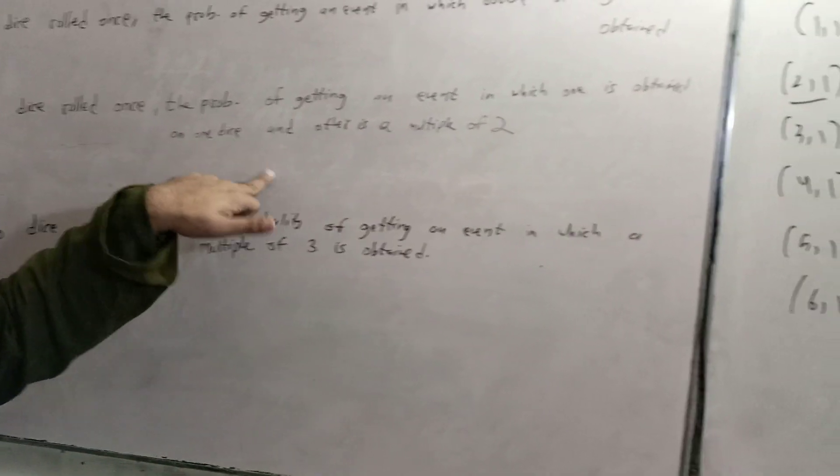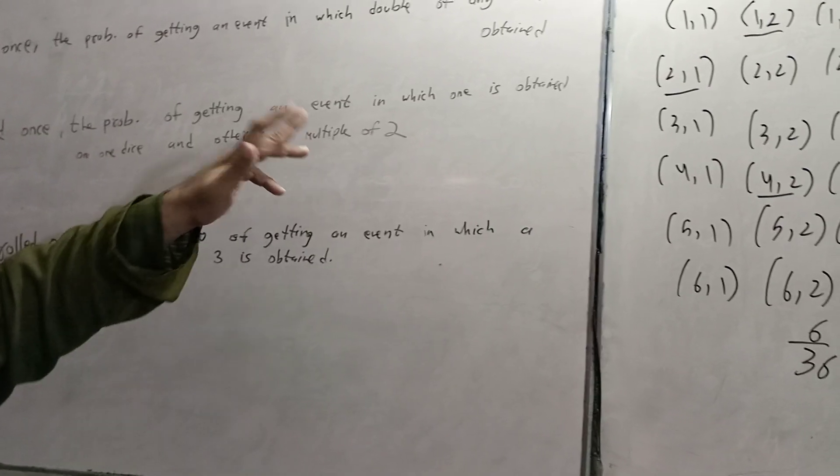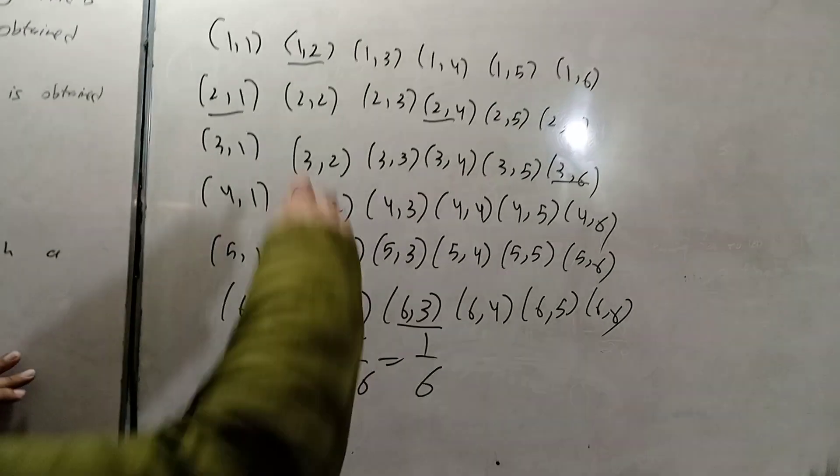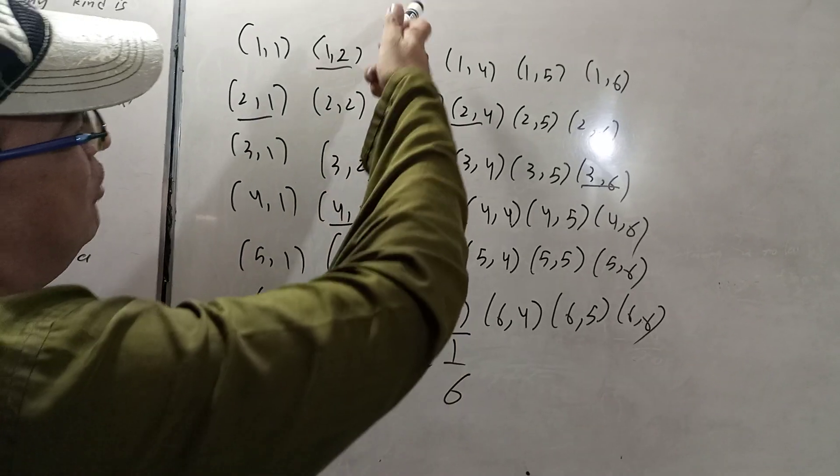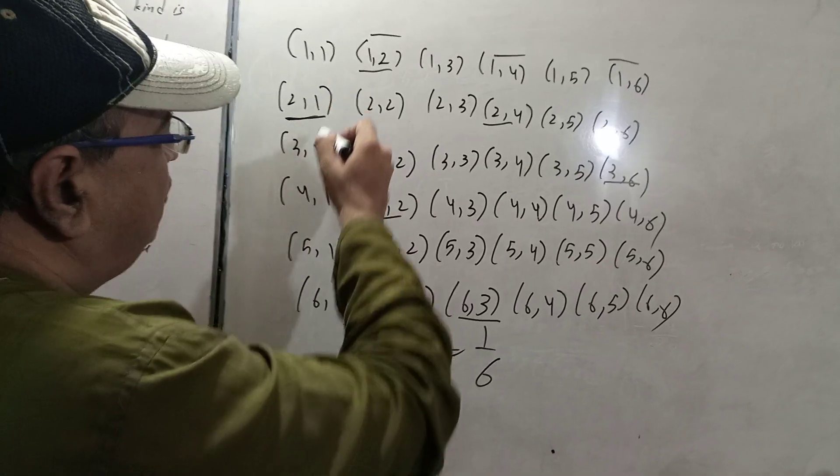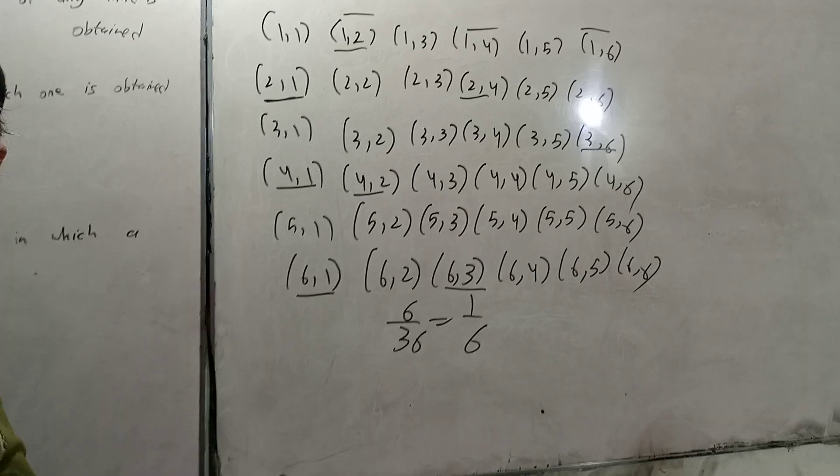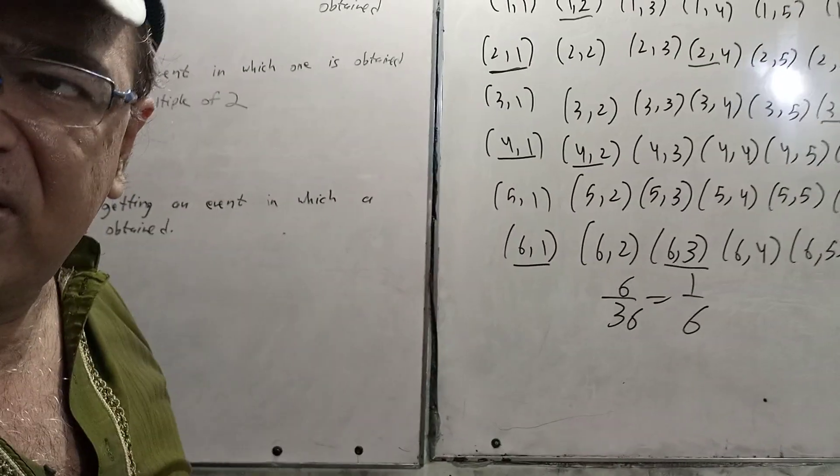Two dice roll, probability of getting an event in which one is obtained on one die and the other is a multiple of two. The outcomes are (1,2), (1,4), (1,6), (2,1), (4,1), (6,1). Thank you.